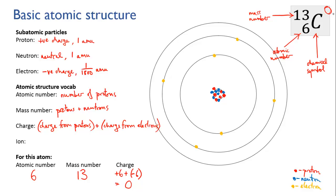If the atom has a charge, you put it at the top right, but our carbon atom is neutral, so we're going to leave that blank. From this symbol, you can get all of the information that you need to characterise an atom.